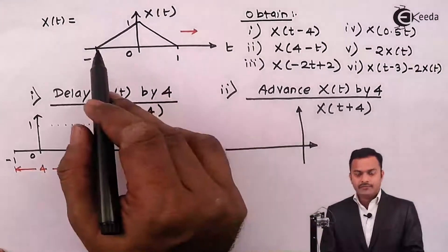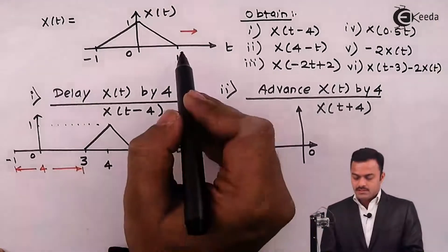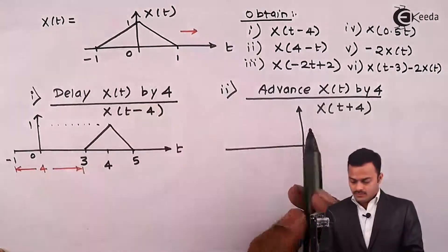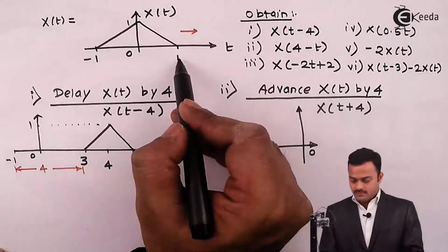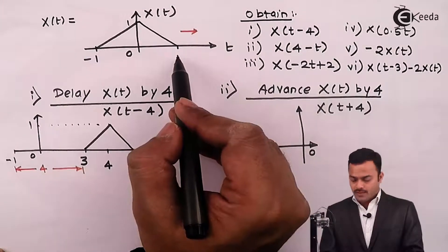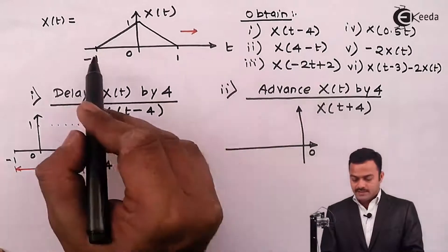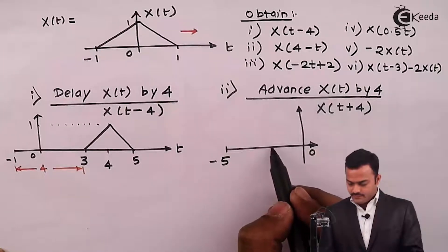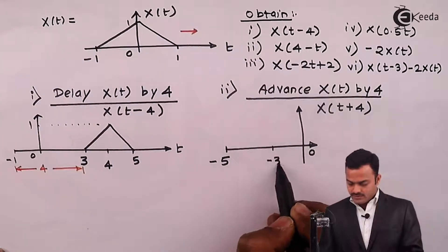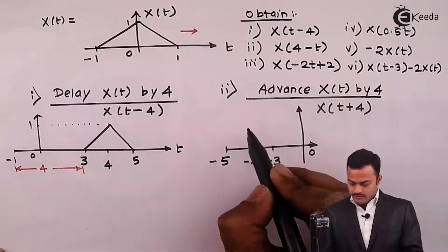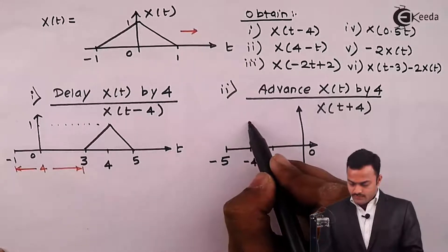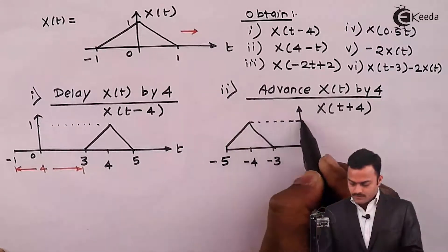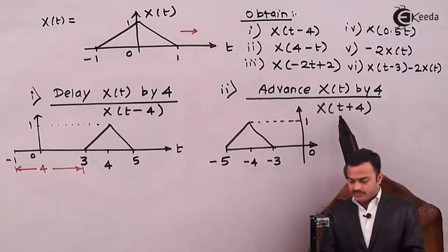Advancing X of t by 4 units means we need to subtract 4 from both extremities. So subtracting 4 from 1 gives minus 3, and from minus 1 gives minus 5. The signal will have a span from minus 5 to minus 3, without change in amplitude which is 1.